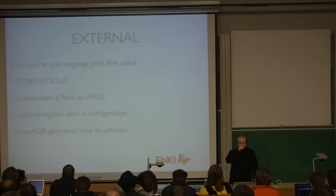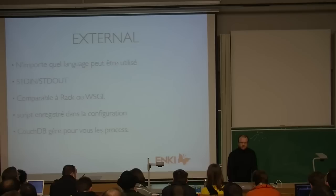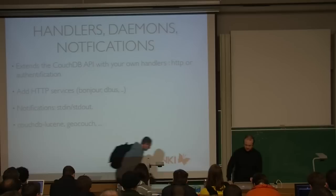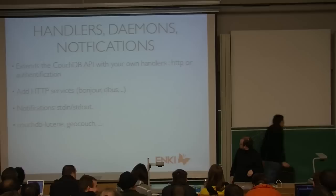This works like WSGI or Rack in Ruby — HTTP gateways for Python and Ruby objects. You don't need to manage process spawning yourself. CouchDB will spawn processes for you — it will create one process and reuse it as needed.